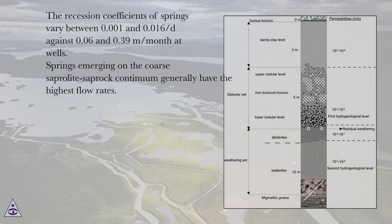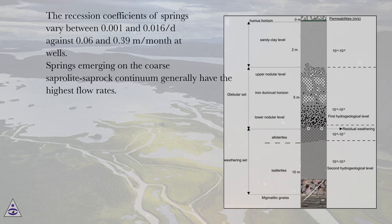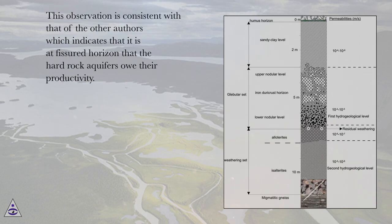The recession coefficients of springs vary between 0.001 and 0.016 per day, against 0.06 and 0.39 meters per month at wells. Springs emerging on the coarse saprolite–saprock continuum generally have the highest flow rates. This observation is consistent with that of other authors, which indicates that it is at the fissured horizon that the hard rock aquifers owe their productivity.